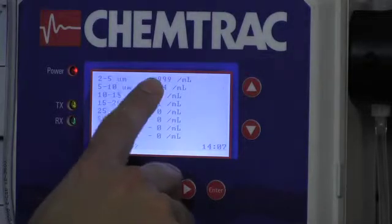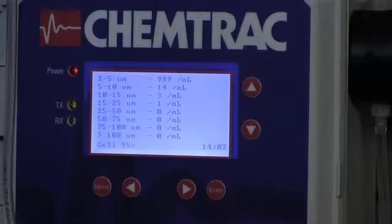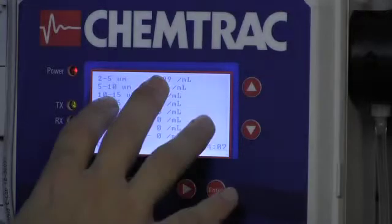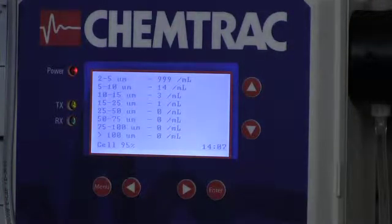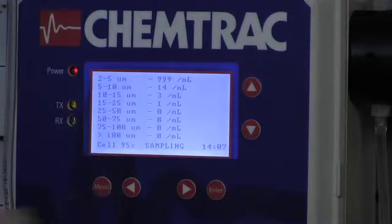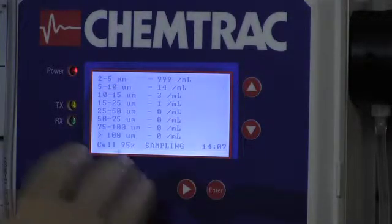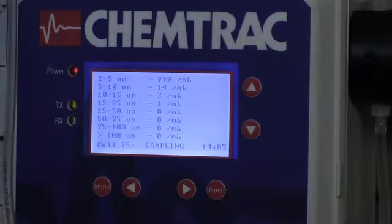So now you can see we have exactly 999 counts. Now that does include our background counts, so that would actually be about 950. We have really no way of telling the unit what the background counts are, so that's why it's important that your background counts are low, less than 50, ideally.